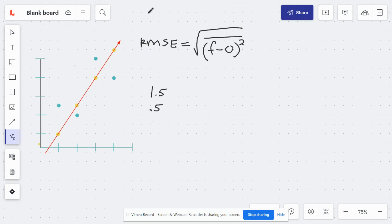And then for the final one, x equals 4, the actual is 4 comma 4, and the predicted is 4 comma 5.5, so a difference of 1.5. So now that we have the difference, which is this F minus O part, we have to square it.